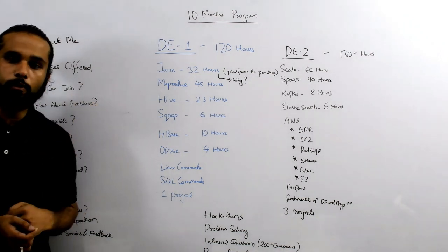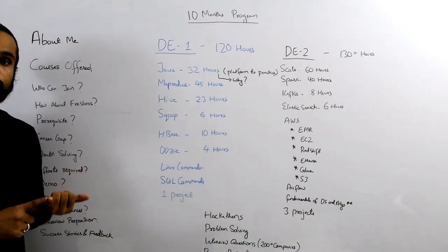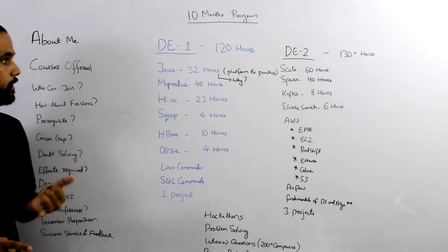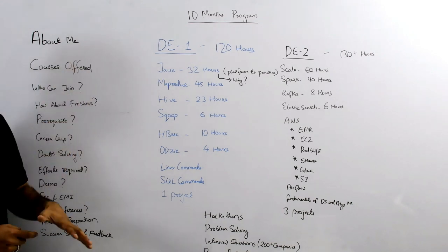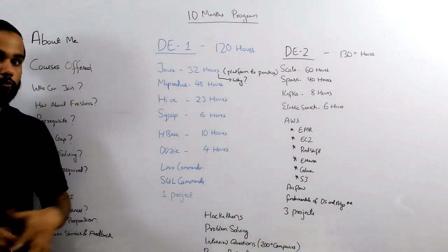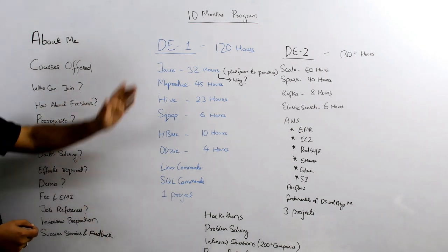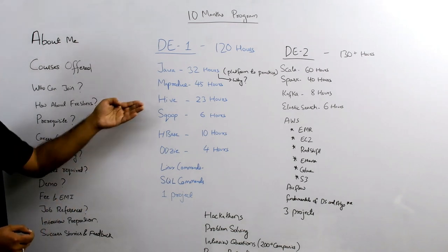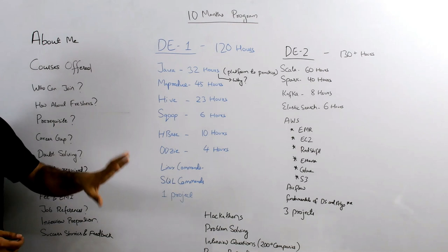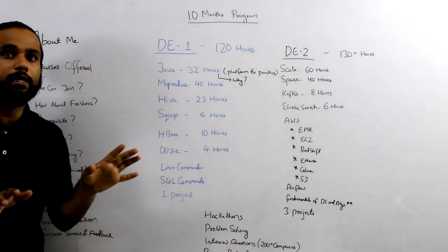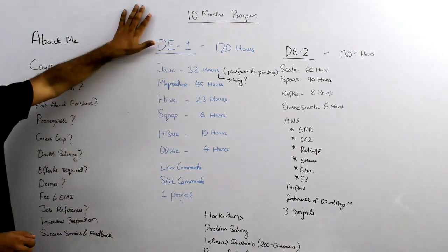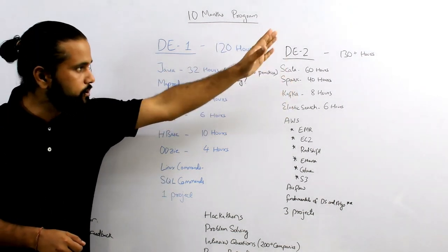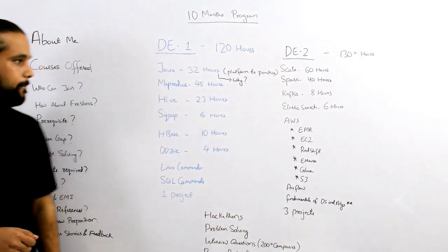Who can join? Who should join the DE1 program? If you have no exposure on data engineering, you have no clue what big data does, then you should go with DE1 first. However, we get lots of students and working professionals who say they've been working on data engineering one for a long time, using Hive and Sqoop at their job, worked a bit on Scala and Spark but not in detail. In that case, you can happily skip DE1 and directly jump into the DE2 program.